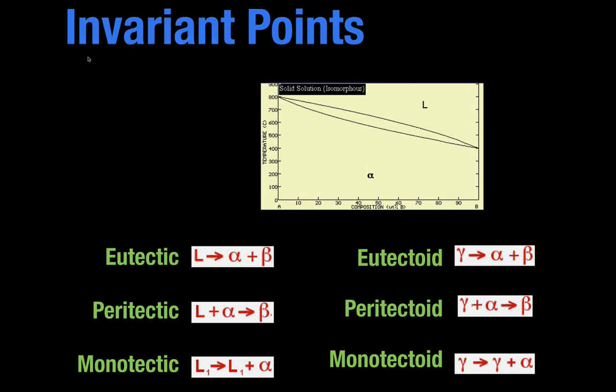All right, so right now I want to talk a little bit about invariant points. These are things like the eutectic, the eutectoid, the peritectic, etc. So right here you see a typical phase diagram. This is one that's called an isomorphous phase diagram because there's continuous solubility of A in B and B in A.